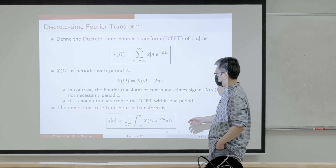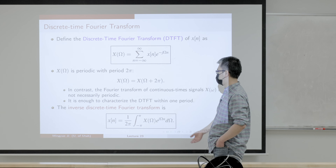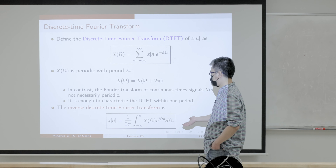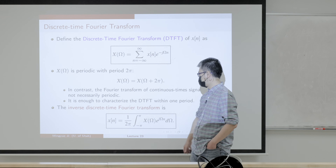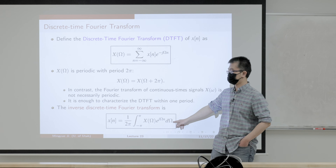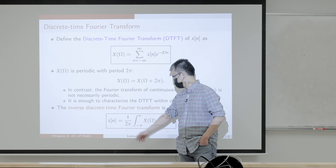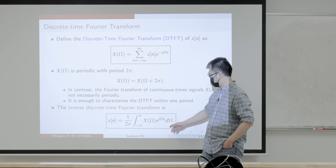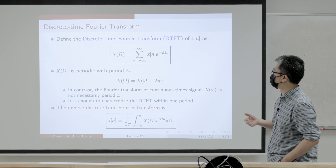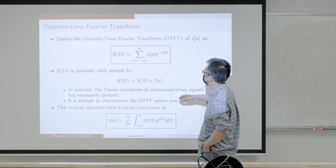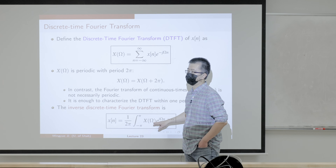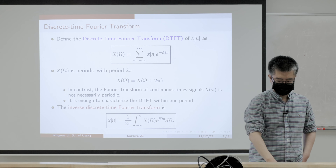For the inverse transform, it will be extremely similar to the inverse CTFT. There's a scaling factor, and the 2 pi is because of omega — there's a 2 pi inside the capital omega — so we need a scaling to make them equal. Be careful that in the time domain we have a discrete time signal, but in the frequency domain x(omega) is continuous.